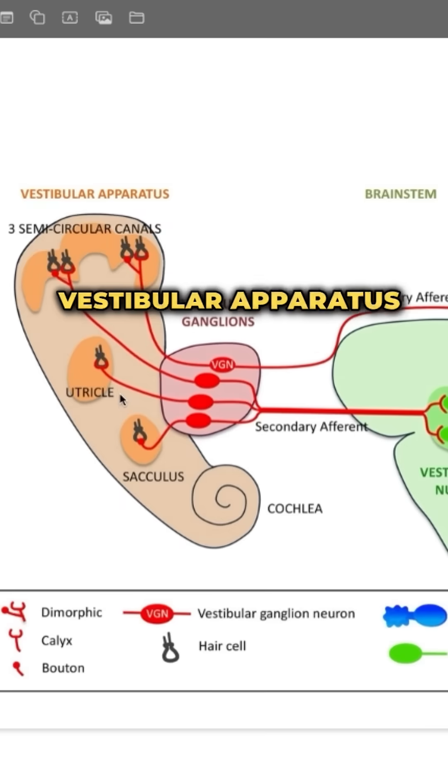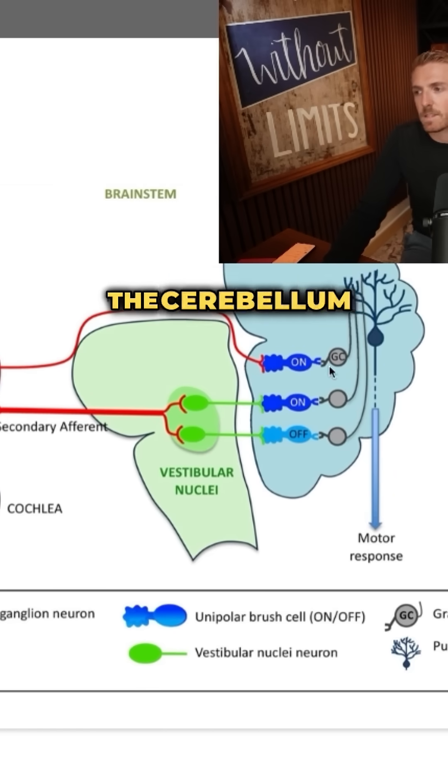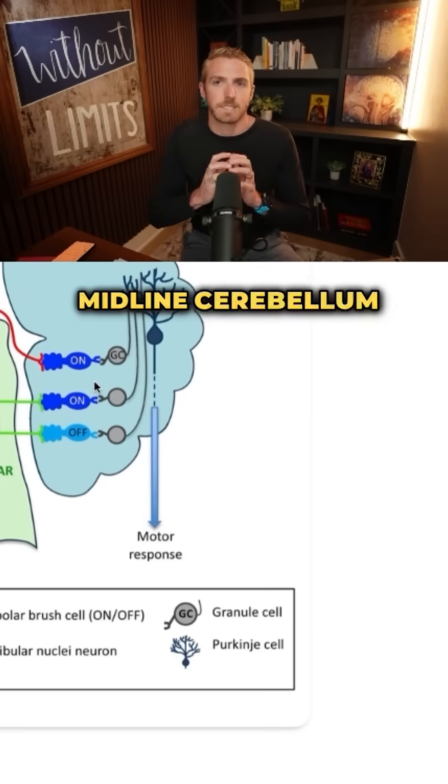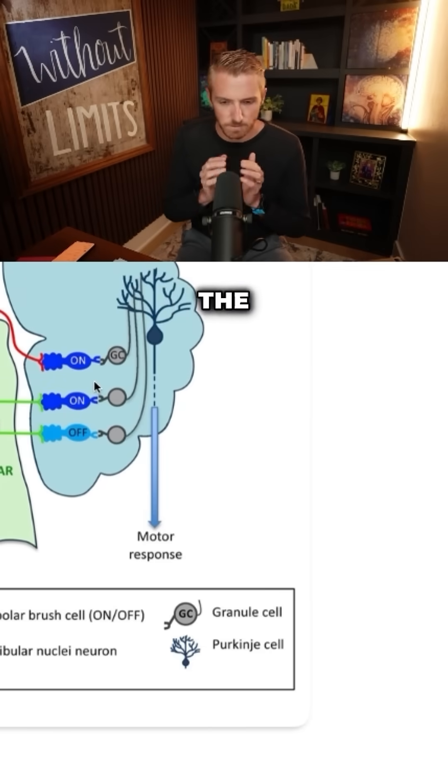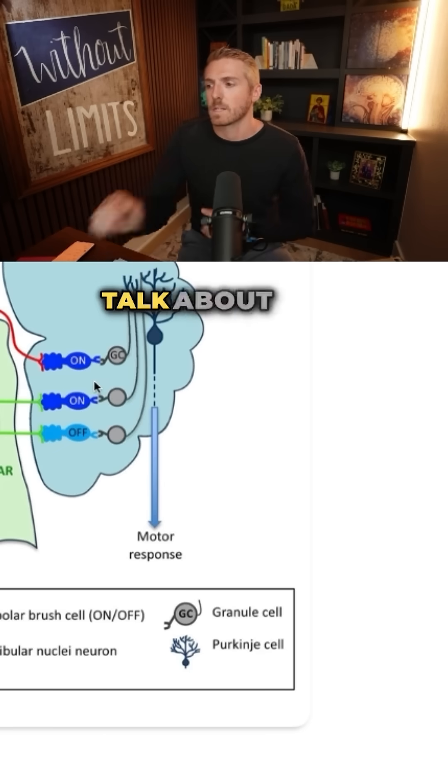We have the vestibular apparatus, information comes into the vestibular nuclei, but then we have the cerebellum that coordinates that. The midline cerebellum is a big aspect of that, and the flocculonodular lobe is a big aspect of that. We're going to talk about that.